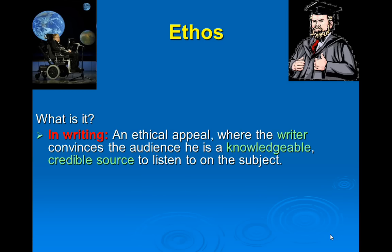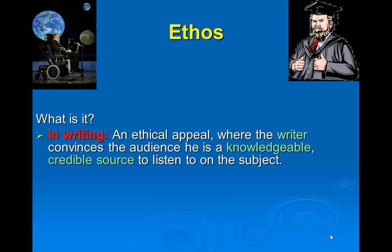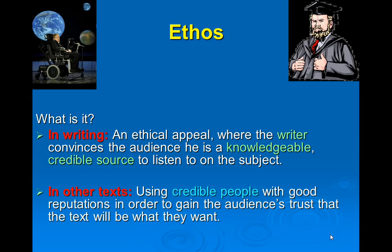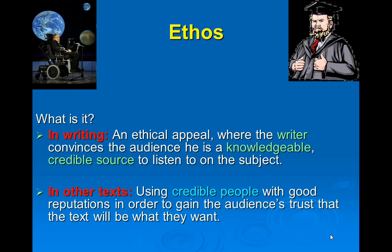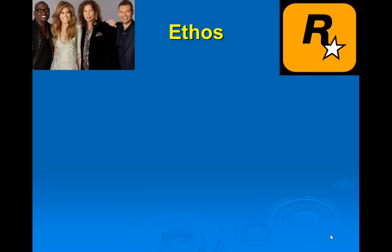Ethos, in writing, is when the writer tries to convince you that they are a knowledgeable, credible source. For example, Stephen Hawking has ethos because he is a credible, knowledgeable source to listen to about science. In other kinds of texts, ethos works the same way — they use credible people with good reputations to gain the audience's trust.